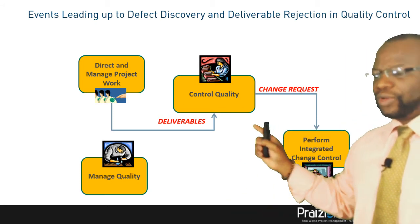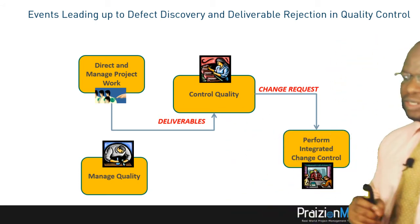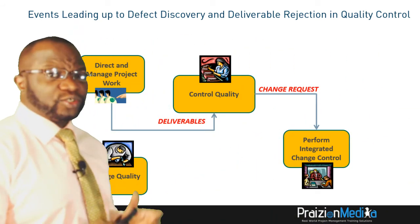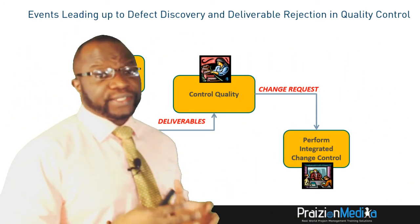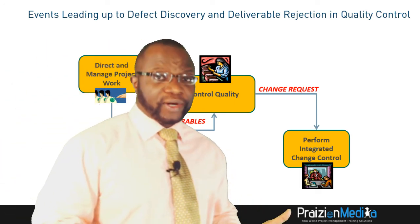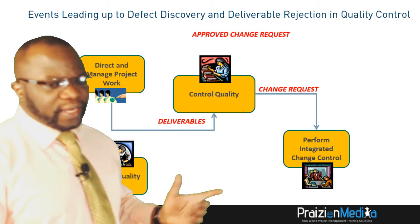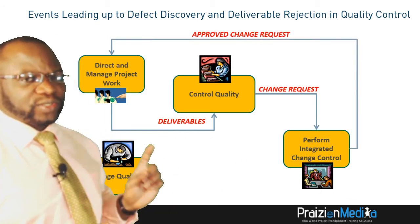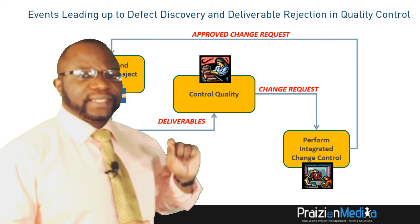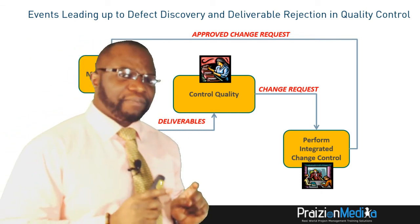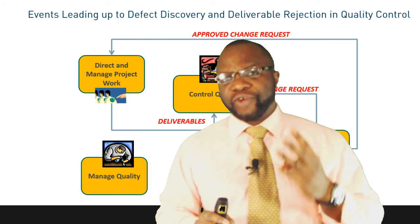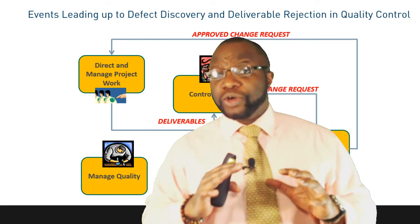That change request goes to Perform Integrated Change Control, where the change control board — or whoever is the approving authority — decides whether to approve or reject the change request. In this case, it was approved. But take note of the fact that this approved change request cycles back into Direct and Manage Project Work.